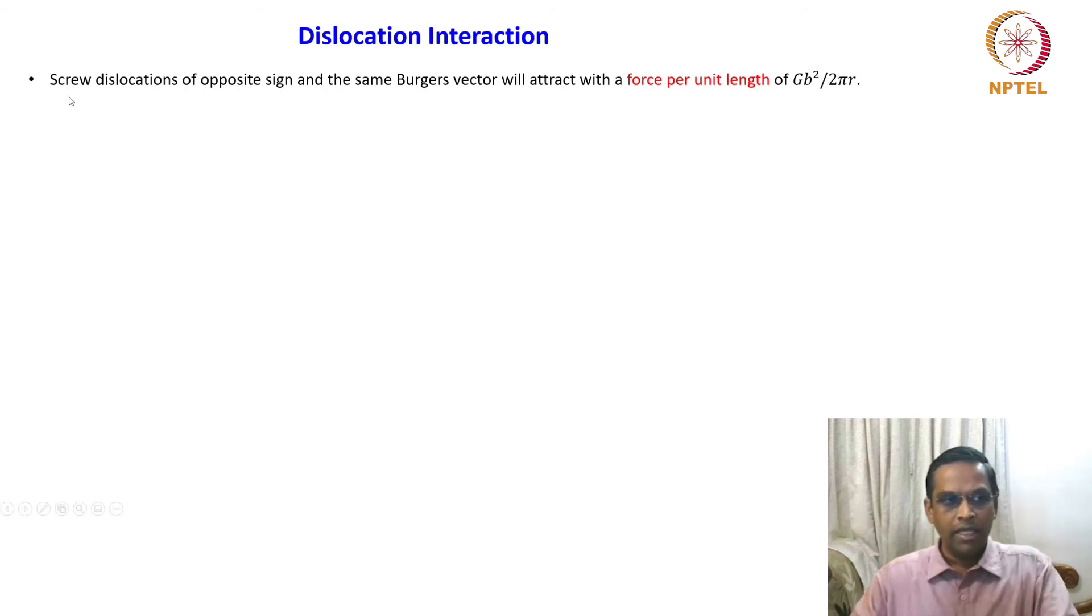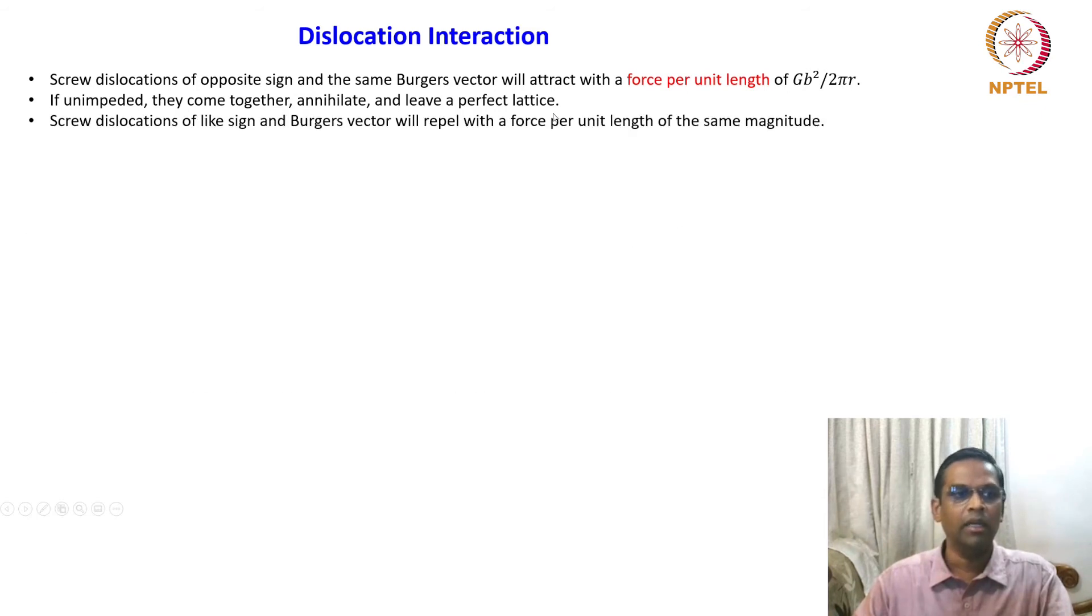Screw dislocations of opposite sign and the same burgers vectors will attract with a force per unit length of g by 2 pi r. If unimpeded, they come together, annihilate, and leave a perfect lattice. Screw dislocations of like sign and burger vector will repel with the force per unit length of the same magnitude.